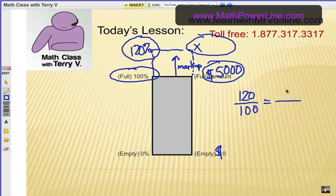120 over 100 equals the new selling price over your original cost of the item. 120 over 100 equals X over 5,000. If you cross-multiply and do 120 times 5,000 and divide by 100, you will get what selling price you should have on the tag.